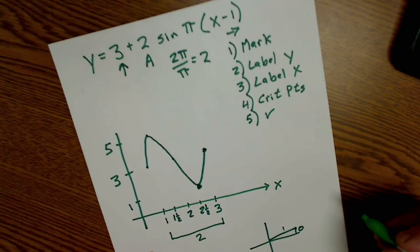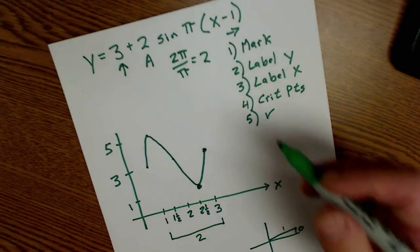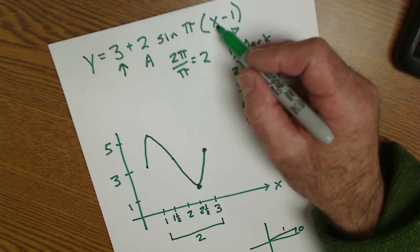So that's graphing trig functions in radian measure. The way you know it's radian, it's x instead of theta.